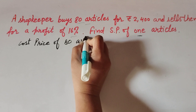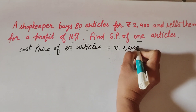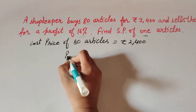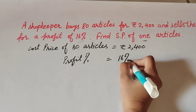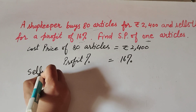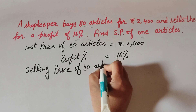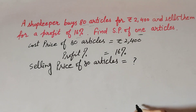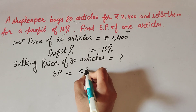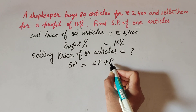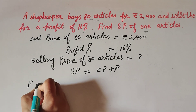Cost price of 80 articles is equal to rupees 2400 — that is given. Profit percentage is equal to 16 percent. Selling price of 80 articles is what we have to find. We know the formula: selling price is equal to cost price plus profit. Since the given thing is profit percentage, we first find the profit.